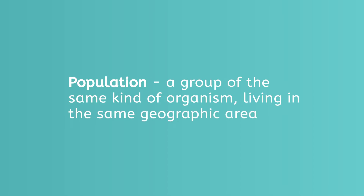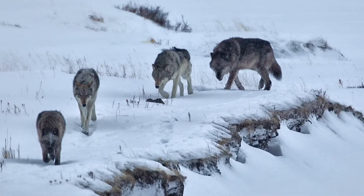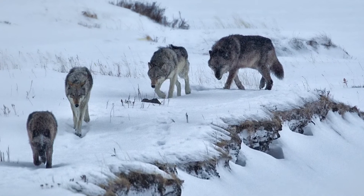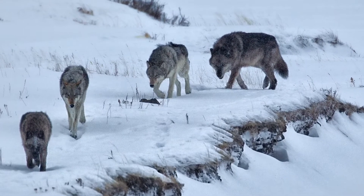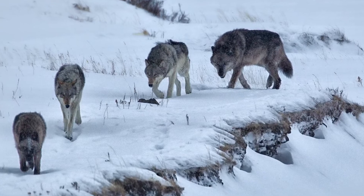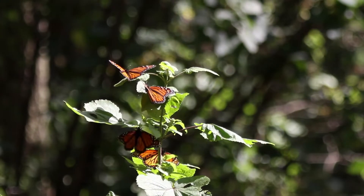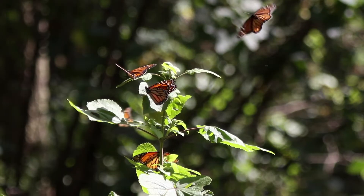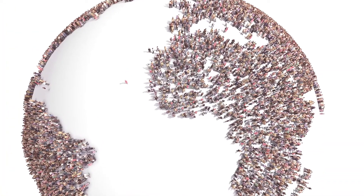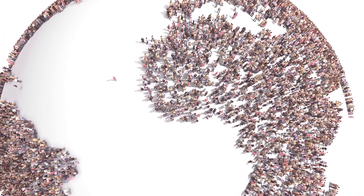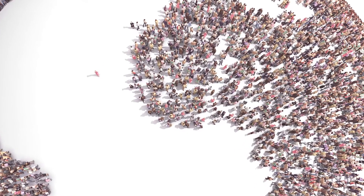By the way, a population is any group of the same kind of organism living in the same geographic area. We are focusing on the population of wolves in the Yellowstone ecosystem right now, but a population could also be all of the monarch butterflies in a certain meadow, or even all of the humans on Earth. For a group of living things to be a population, they do have to be the same type of organism.